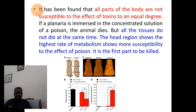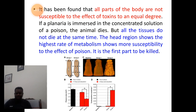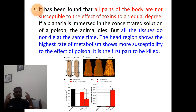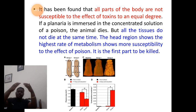The second method is exposure of planaria to toxins. When a planaria is immersed in a concentrated solution of a poison — generally barium chloride — the animal dies. But remember: all tissues do not die at the same time. As the head shows the highest metabolism, it becomes more susceptible to the effect of these poisons. So the poison acts most on the head region, and the head part gets killed first. Then follows the middle region, then the posterior region — the last part to die is the posterior tail part.